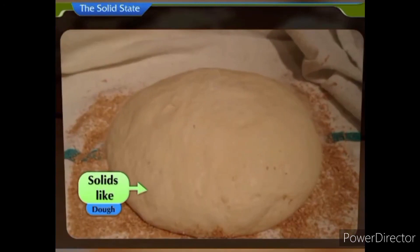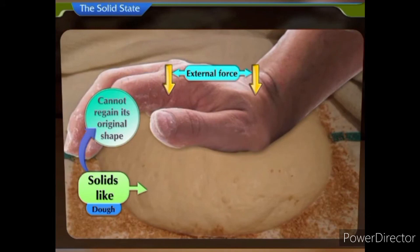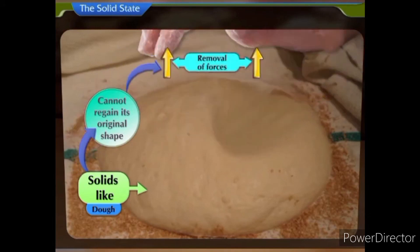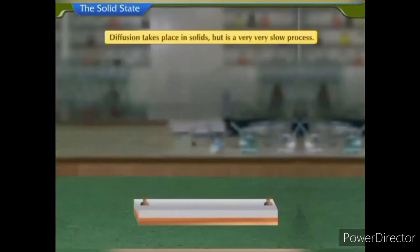Solids like dough can be bent when force is applied, but dough cannot regain its original shape when the force is removed. This is called plasticity of solids. Diffusion takes place in solids, but it is a very, very slow process. Therefore, people think that diffusion does not take place in solids.